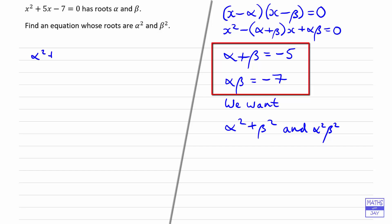So alpha squared plus beta squared is going to be (alpha plus beta) all squared minus 2 alpha beta, because if we multiply out (alpha plus beta) by (alpha plus beta), we'll get alpha squared plus 2 alpha beta plus beta squared. So it's just a matter now of substituting in the values that we've already written down.